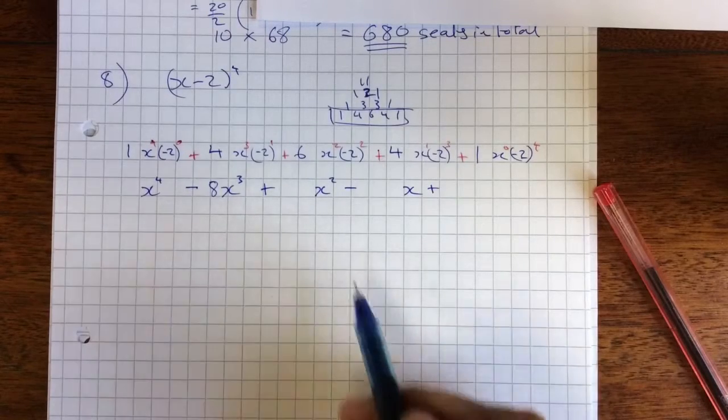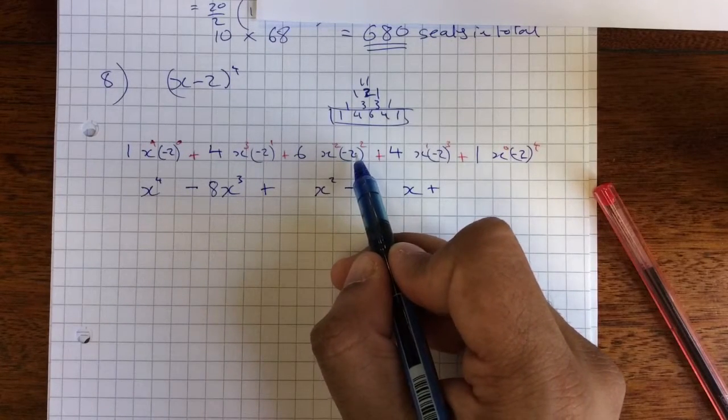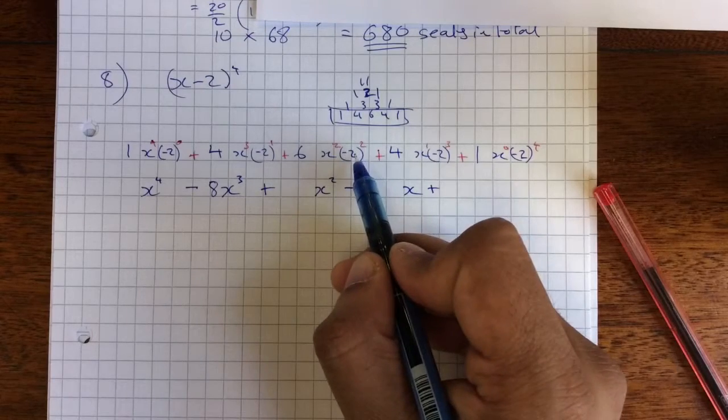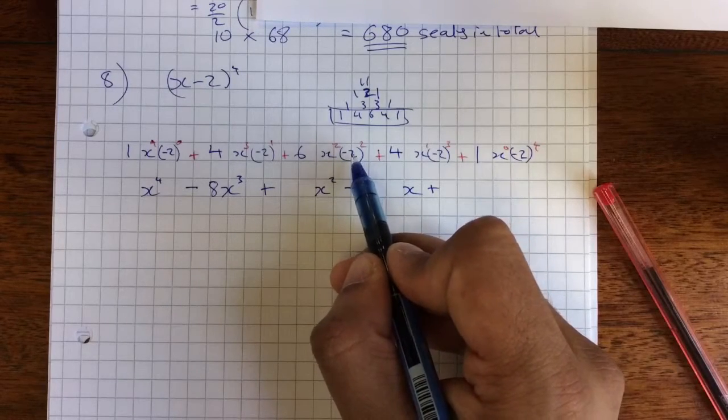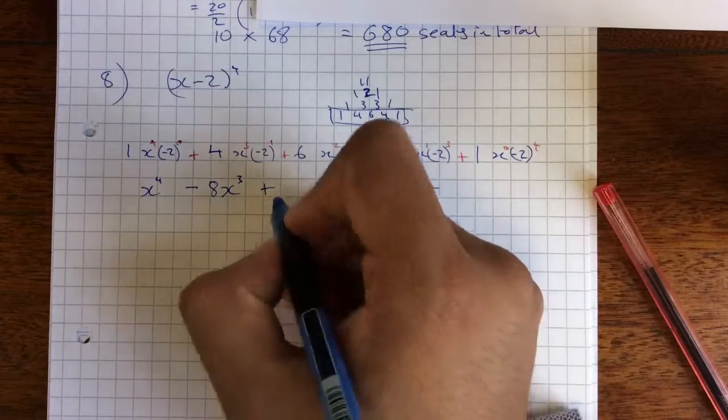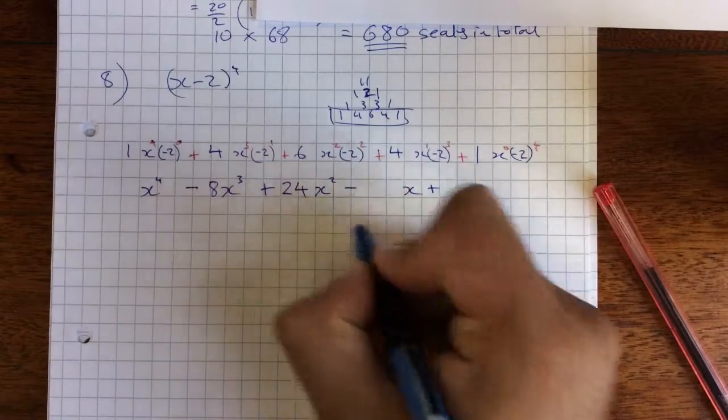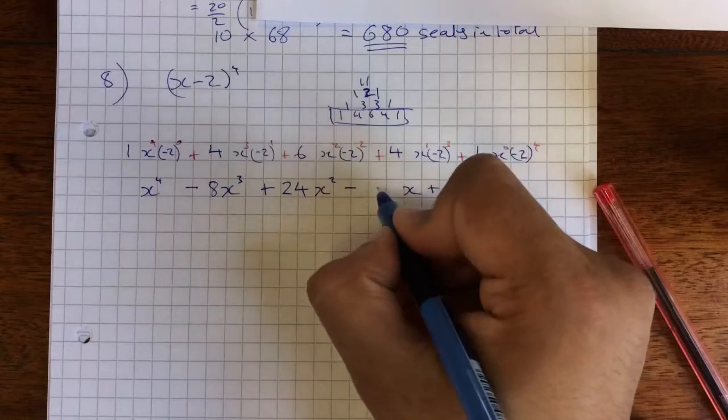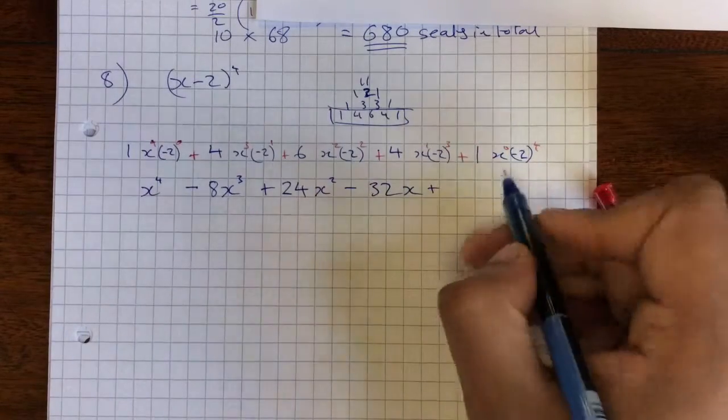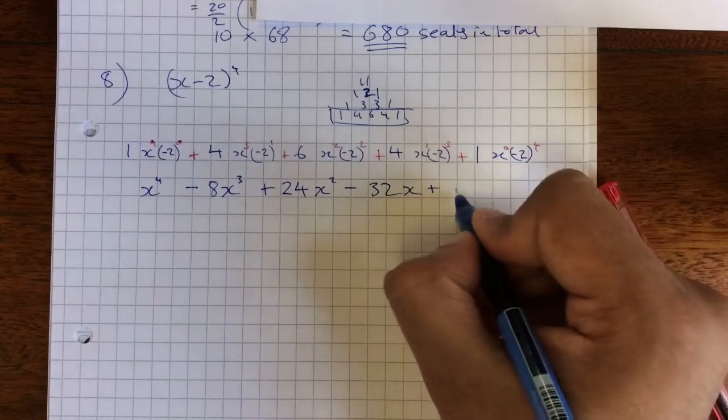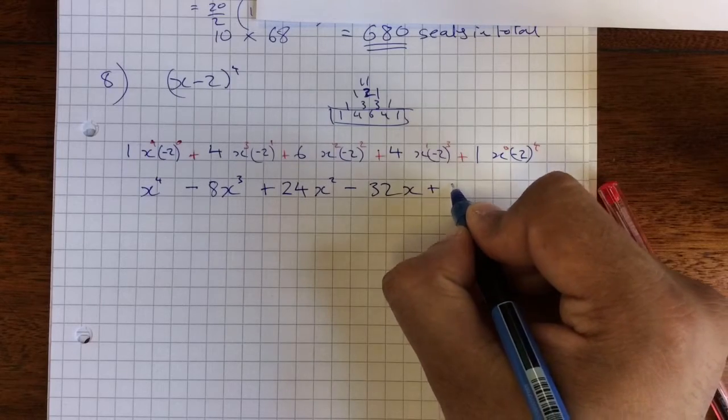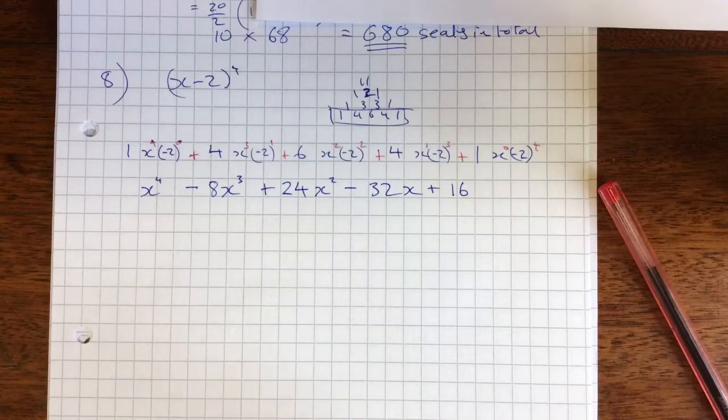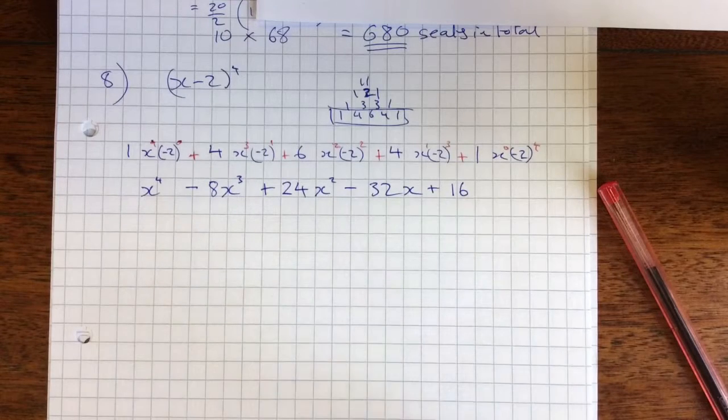Okay. Now, this is 6 times 2 squared. I don't have to worry about the negative anymore. 6 times 2 squared. 2 squared is 4. 6 times 4 is 24. 4 times 2 cubed, 4 times 8 is 32. And 2 to the power of 4 is 16. Okay. I think that's correct.